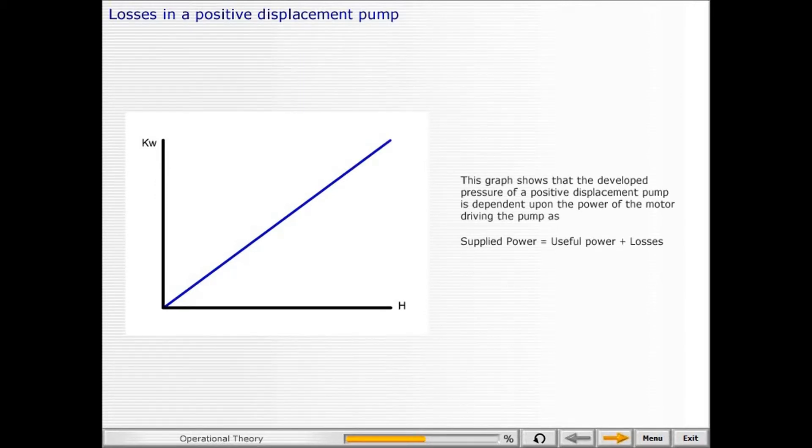This graph shows the developed pressure of a positive displacement pump is dependent upon the power of the motor driving the pump, as supplied power equals useful power plus losses. For a positive displacement pump, losses are mainly mechanical, with the exception of a small loss due to leakage.